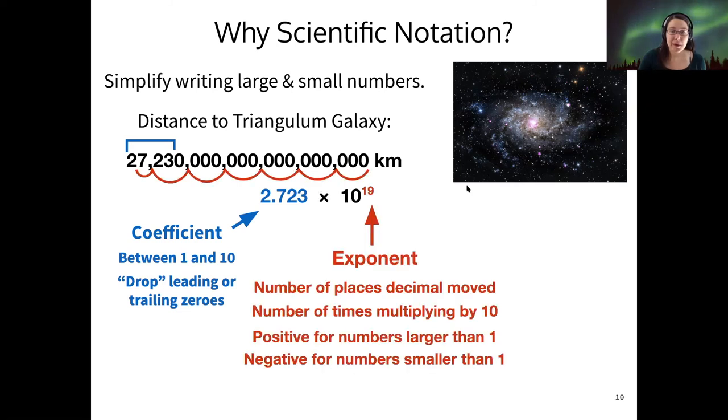And then we multiply it by 10 to an exponent. The exponent is the number of places our decimal would have to move from the place it is in the coefficient to the end of the number. So if I count up all my groups of three, I have one, two, three, four, five, six groups of three digits. So that's 18.